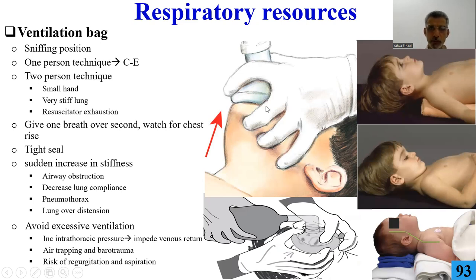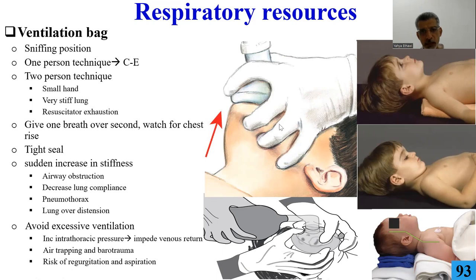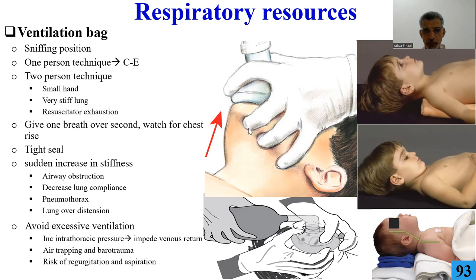Looking at the correct sniffing position, the tip of the nose and chin are at the same level. Sometimes you need a shoulder roll or head roll to achieve the correct position. Hold the mask using the C and E technique — the C shape (index and thumb) is around the mask, and the E (three fingers) is at the jaw.